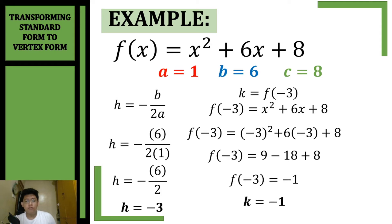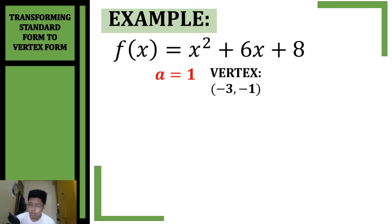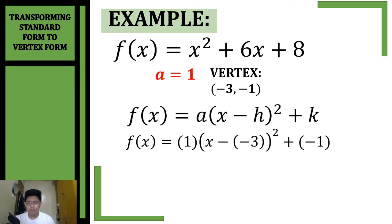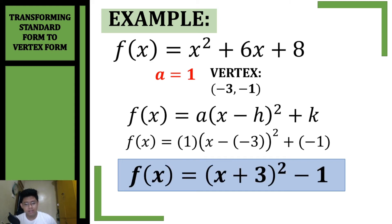So k is equal to negative 1, and our vertex is (negative 3, negative 1). We get the value of a, which is 1, and copy our vertex. Substituting into the vertex form: 1 times the quantity of (x minus negative 3) squared plus negative 1. Simplifying — negative times negative is positive, positive times negative is negative — our vertex form is f(x) = (x + 3)² minus 1.